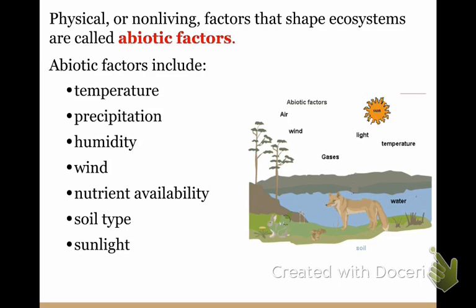Physical or non-living factors that shape ecosystems are called abiotic factors. Here is a longer list of abiotic factors: temperature, precipitation, humidity — how much water is in the air — wind, nutrient availability — so is it good soil or crappy soil — soil type, whether it's sandy or made of clay, how many earthworms, and the amount of sunlight.